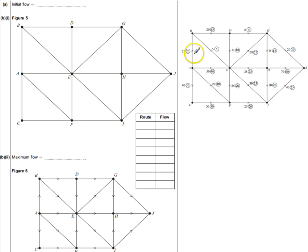We want to take the information here and put it onto this network using the labeling procedure. From A to B, there's 20 initially flowing through with a potential of 5 more. So potentially another 5 can flow through and a potential backflow of 20.